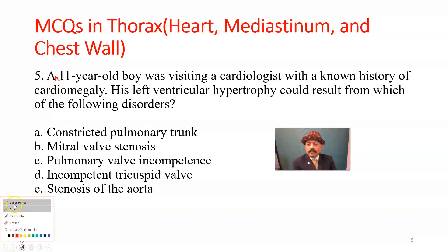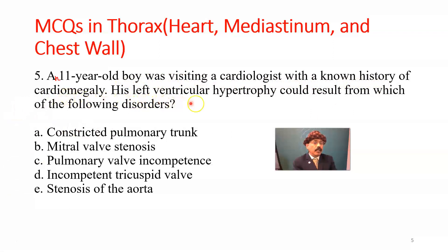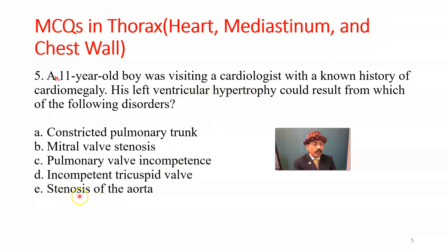Question number five: an 11-year-old boy was visiting a cardiologist with a known history of cardiomegaly. Left ventricular hypertrophy could most probably result from which disorder? Choices are: A) constricted pulmonary trunk, B) mitral valve stenosis, C) pulmonary valve incompetence, D) incompetent tricuspid valve, E) stenosis of the aorta. The answer is E, stenosis of the aorta. Other conditions may contribute to cardiomegaly, but left ventricular hypertrophy is particularly associated with aortic stenosis.